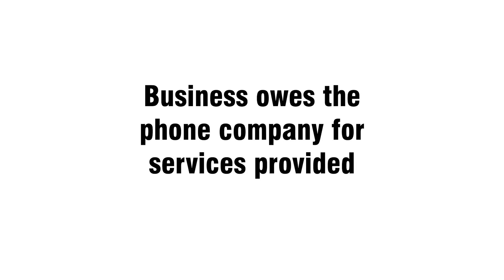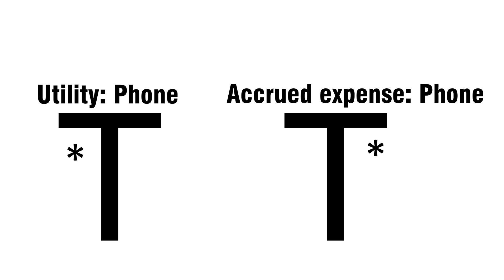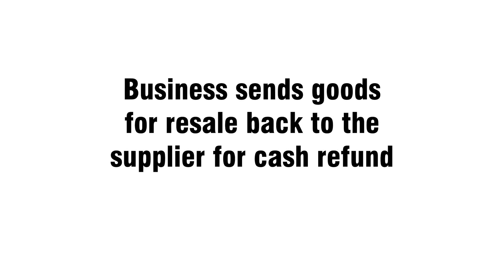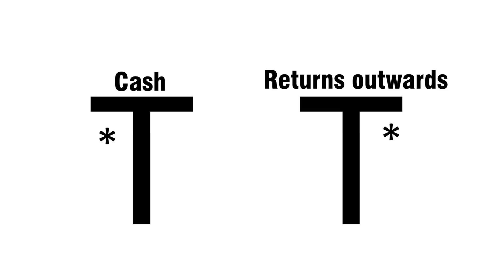Business owes the phone company for services provided: debit utility phone, credit accrued expense phone. Business sends goods for resale back to the supplier for a cash refund: debit cash, credit returns outwards.